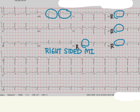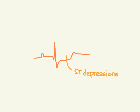The last thing I want to go over is that ST depressions that are not reciprocal changes for ST elevations somewhere else are just a marker of ischemia, which could, if it persists, turn into an MI. So if you see lateral ST depressions but you don't see any right-sided ST elevations, you could say this is probably lateral ischemia. This is also very worrisome because it could turn into an MI, so you want to take note of that and respond accordingly.